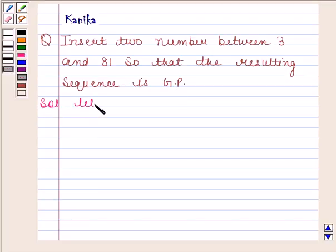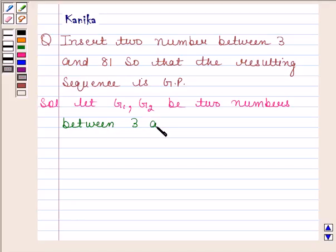Let G1, G2 be two numbers between 3 and 81.